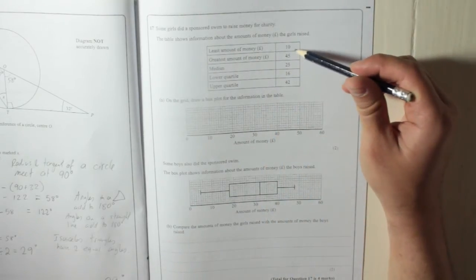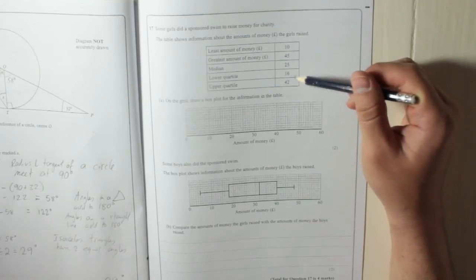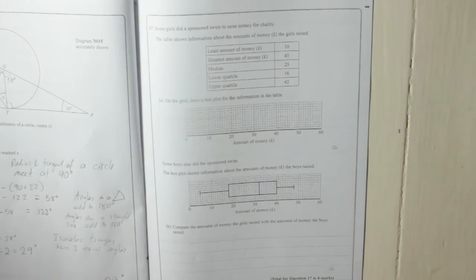So you've got the least amount of money, the greatest amount, the median, the lower quartile and the upper quartile. On the grid, draw a box plot for the information in the table.